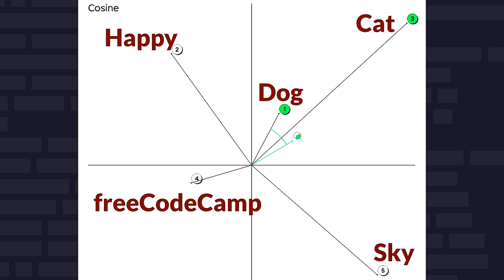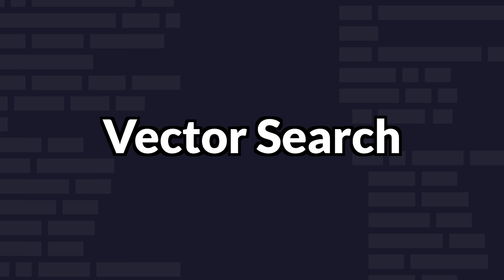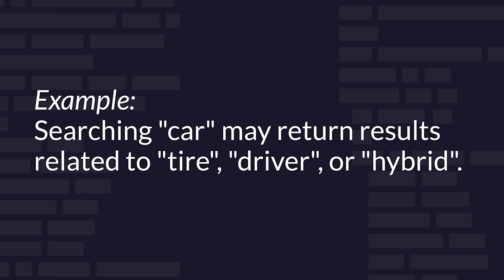By turning items into vectors or lists of numbers, we can use math to understand and process them. For example, we can measure how close two vectors are to see how similar the items they represent are. Words can be turned into vectors, and words with similar meanings have vectors that are close together. This helps in tasks like searching for information, translating languages, or even chatting with AI. Creating these embeddings usually involves a lot of data and some complex math. The computer looks at many examples, like how words are used in sentences, and learns the best way to turn them into vectors.